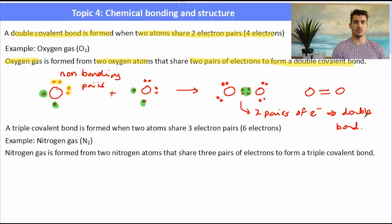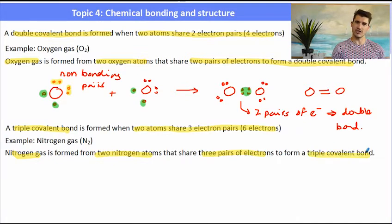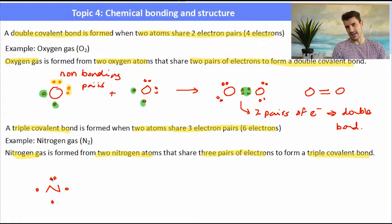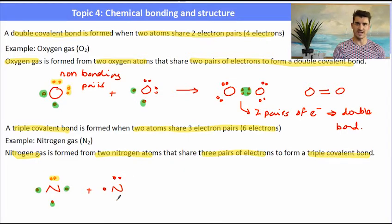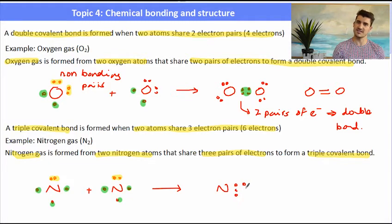A triple covalent bond can be formed when two atoms share three pairs of electrons, or six electrons in a bond. An example of this is nitrogen gas. Nitrogen has five electrons in the outer shell, so it will have one pair of non-bonding electrons and three electrons it would like to share. So it has three unpaired electrons — those are the bonding electrons. When we have two nitrogens, they each have three electrons they want to share, so they form a triple covalent bond, sharing three electrons each. There are six electrons shared in the bond — three pairs — which gives us the triple covalent bond.